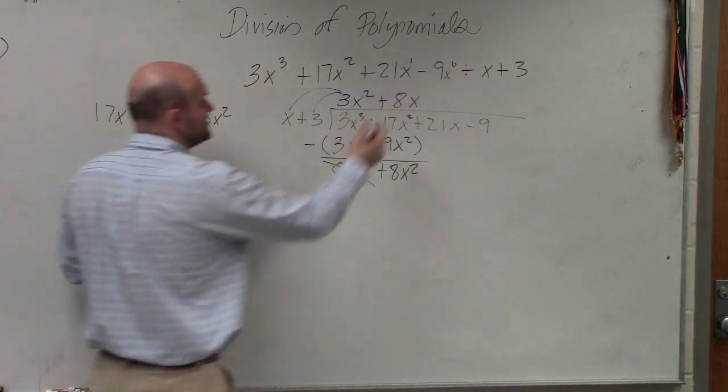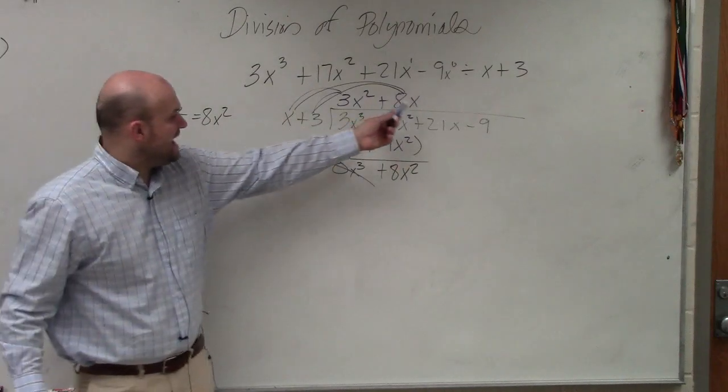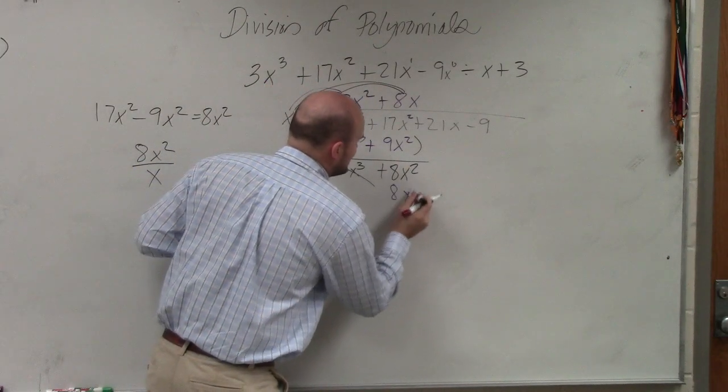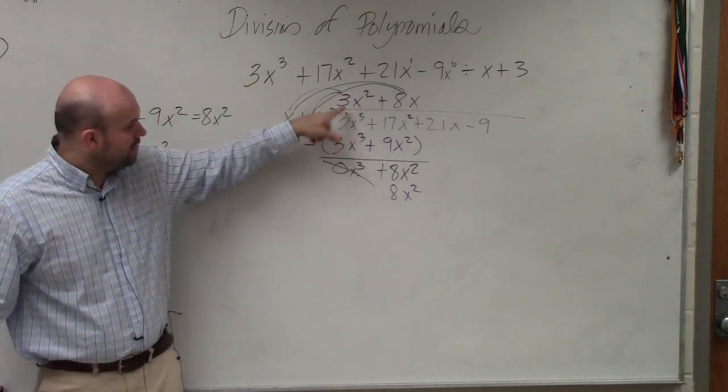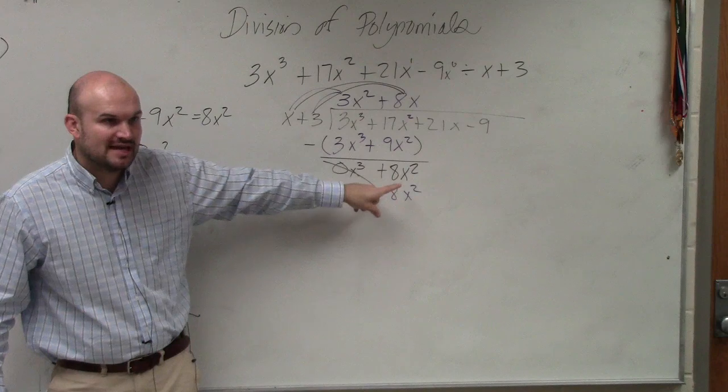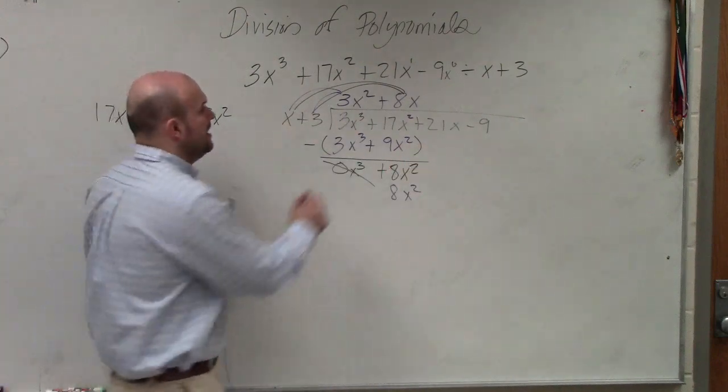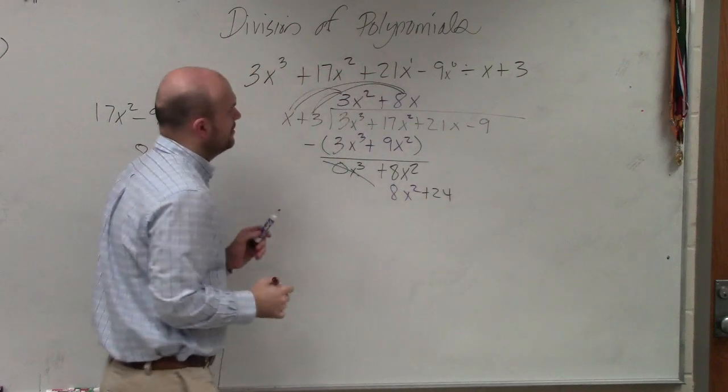Then, again, we do the same thing. Multiply the 8x times both of the terms. 8x times x is 8x squared. Do you guys again see how this pattern is forming? If you do this correctly, you always have those same terms are the same, because what long division is doing is eliminating those terms. And then 8x times 3 is going to be a positive 24x.